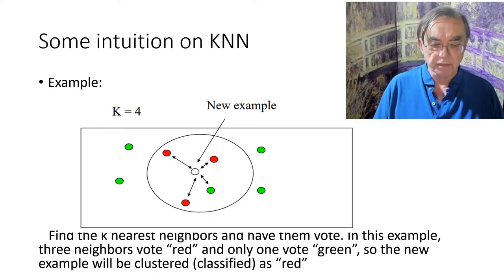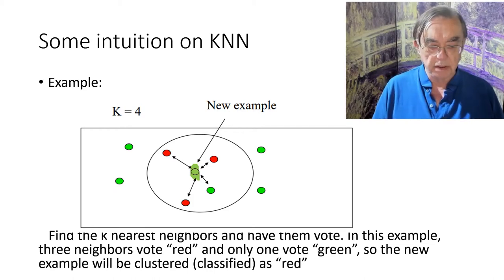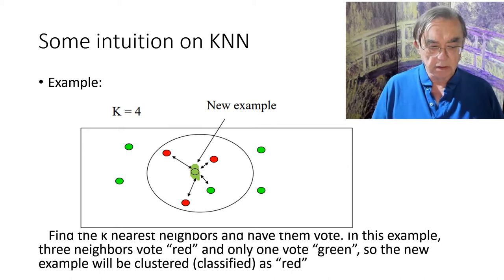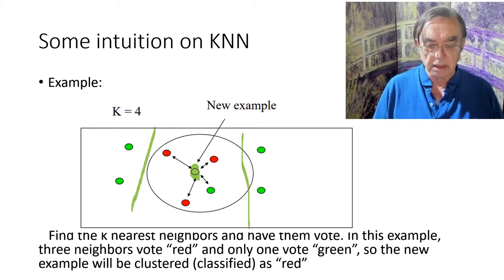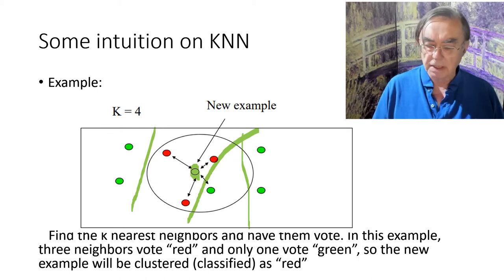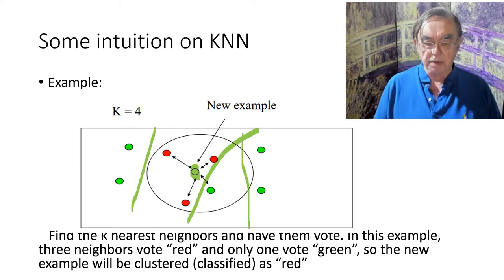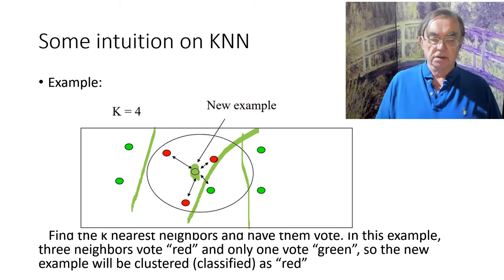Here is an example of k equals 4. We have this new light green point, and we look at the old points which are either green or red. We see three reds and one green nearest this point, so we classify this point as red. Notice this would not do very well with SVM because we have green points on this side and green points on that side — that's a real mess for SVM. There's no way a single line can do that.